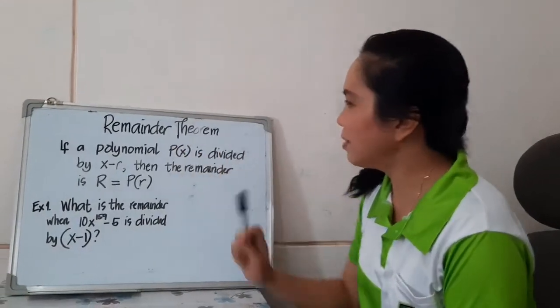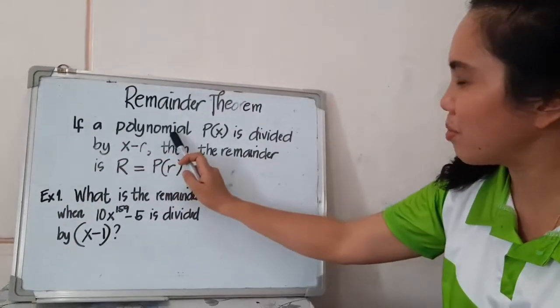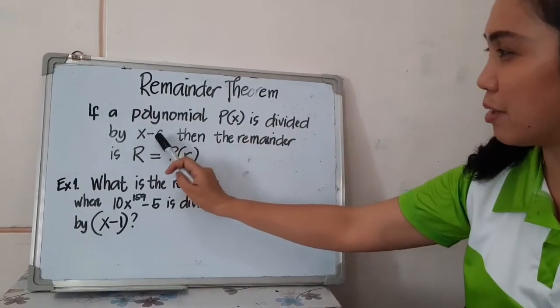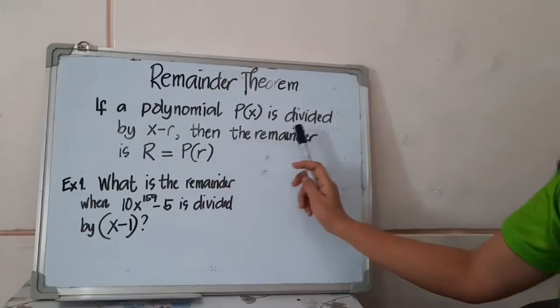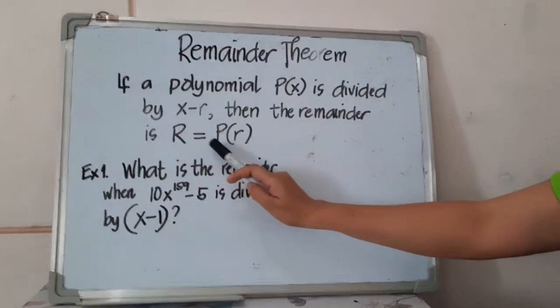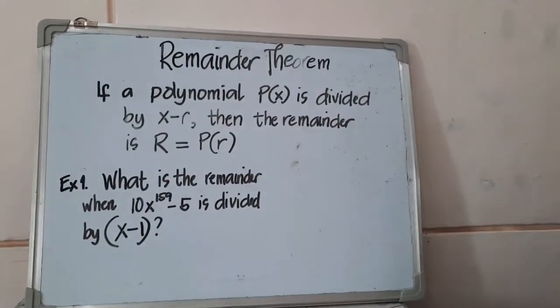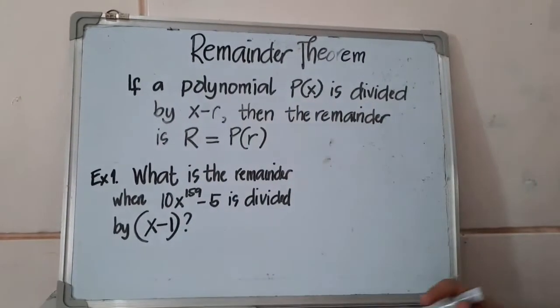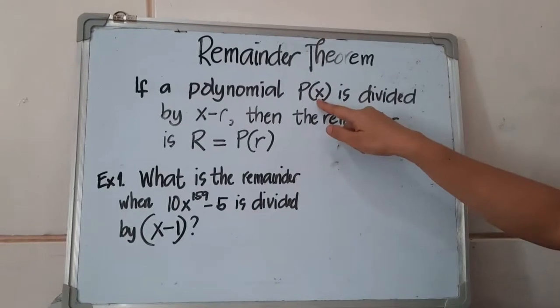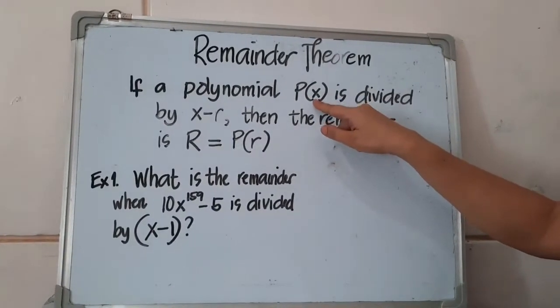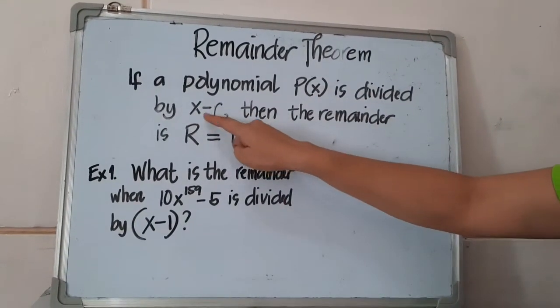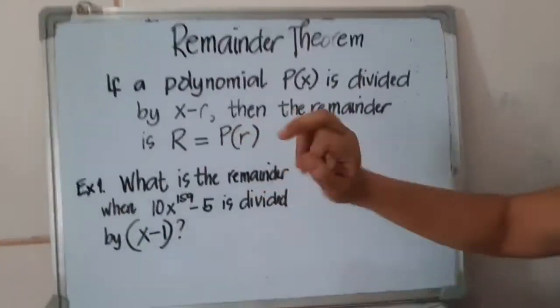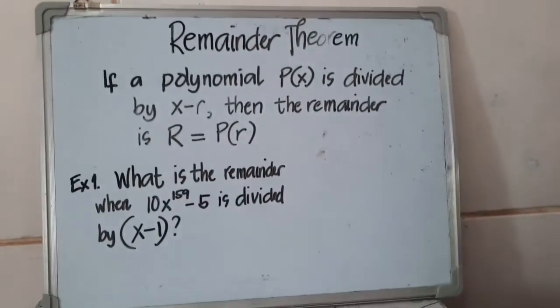Our remainder theorem states if a polynomial P(x) is divided by x minus r, then the remainder R is equal to P(r). Did you get that? I know it's very complicated when you see a lot of variables here. P(x) here will stand as our dividend. X minus r will stand as our divisor. So if we're going to use this remainder theorem, then we can get automatically our remainder.